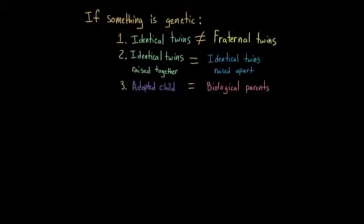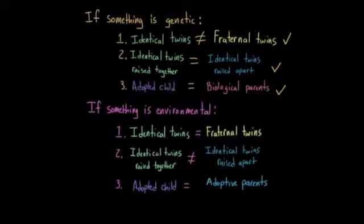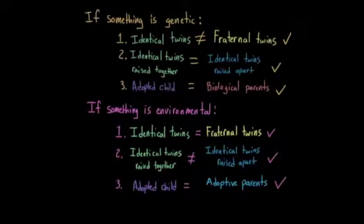To review: if something has a strong genetic component, we'd expect more similarity between identical twins than fraternal twins, no difference between identical twins raised together versus apart, and adopted children being more similar to biological than adopted families. If it's environmentally driven, we'd expect no difference between identical and fraternal twins, closer rates in identical twins raised together than apart, and adopted children resembling adopted families more than biological families.